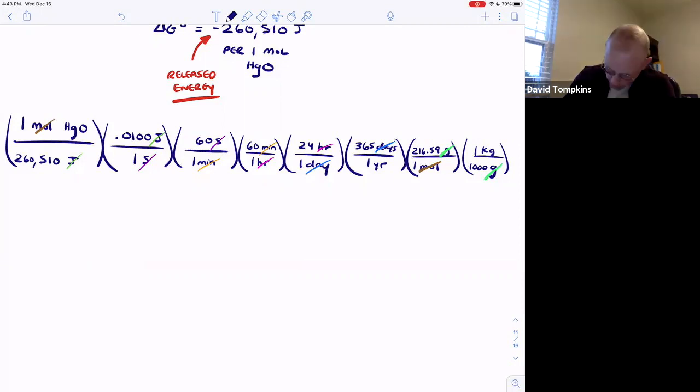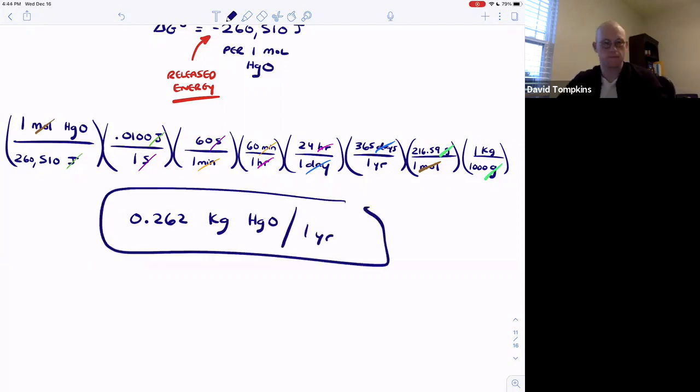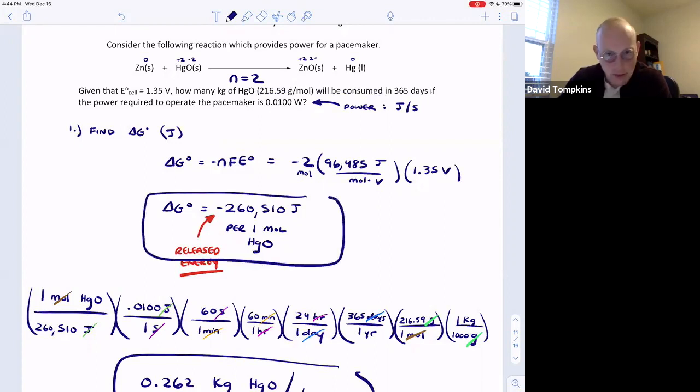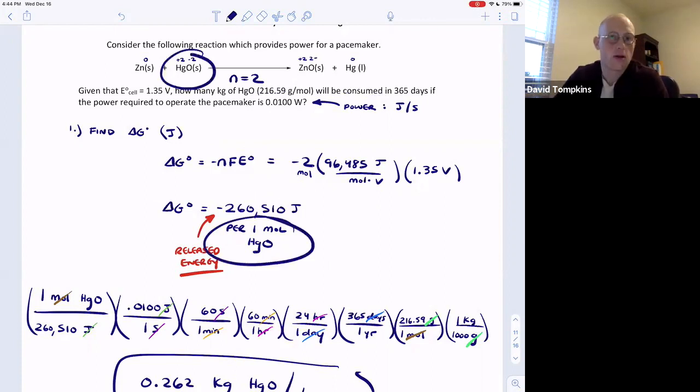The final answer is 0.262 kilograms of mercury oxide that are consumed in one year. This is a problem that simply requires you to understand the meaning of some of these different mathematical parameters. First, knowing the definition of a watt, which is joule per second that relates to the free energy that's being released, so you must calculate that joule value first. Fundamentally, you must know that that's the amount of joules released per the balanced reaction, which involves one mole with an understood coefficient of one for mercury oxide.